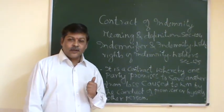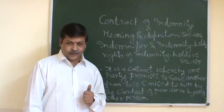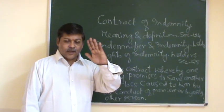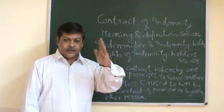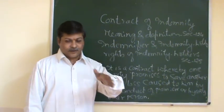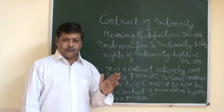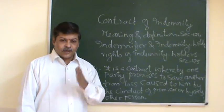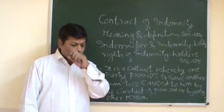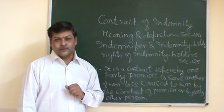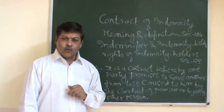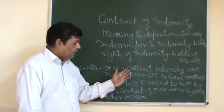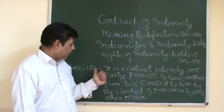Section 124 of the Indian Contract Act. So far, what we have studied — the general principles — we have covered under sections 1 to 75. Now specific contracts we are going to start, commencing from section 124. Here we begin the specific contracts with the contract of indemnity.